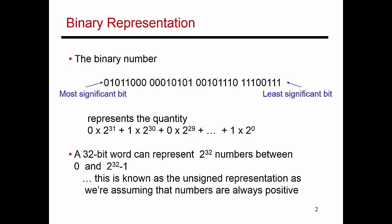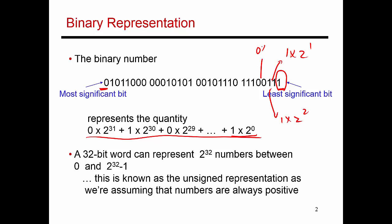By now everyone has seen a binary number. It's worth reminding everybody what a binary number actually stands for. If I give you a 32-bit string of 0s and 1s, the bit on the right is the least significant bit and the bit on the left is the most significant bit. Any number stands for the magnitude represented by this equation: each bit contributes its value times 2 to the corresponding power. You add up all of these quantities to get the value represented by the binary number.